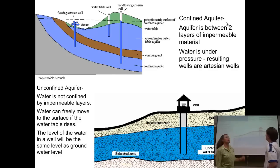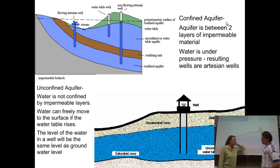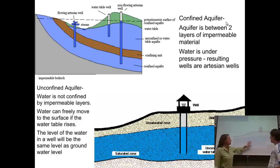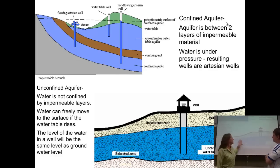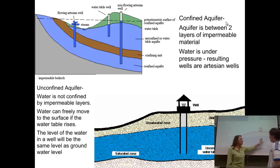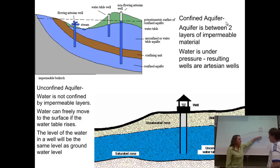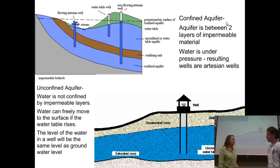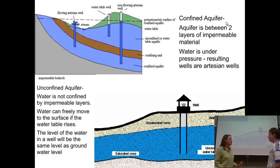The top aquifer is unconfined — the water could recharge it from the surface directly. Now let's look at the bottom picture, because it's a little bit simpler. We've got a confining layer underneath, a saturated zone, the water table itself, and then the unsaturated zone. Somebody has dug a well into this aquifer, and you'll notice that the level of the water in that well is the same as the water table, because it's an unconfined aquifer, so there's nothing causing the water level to change in that well.